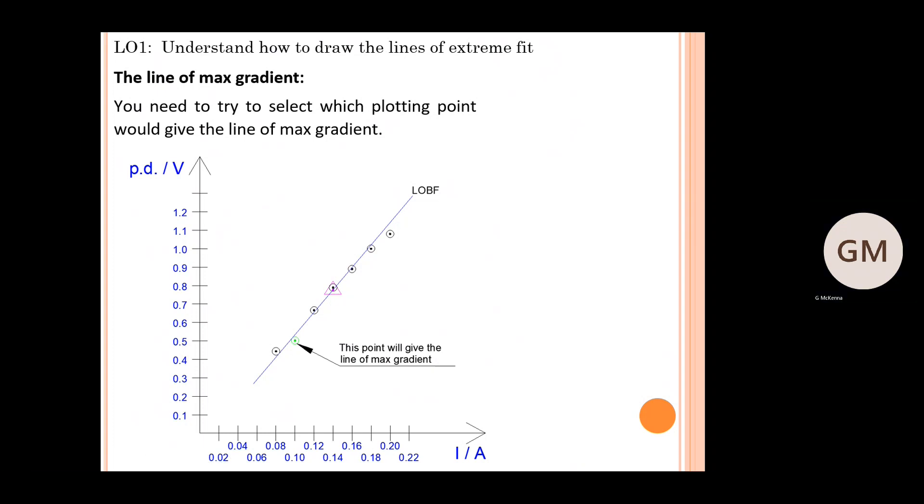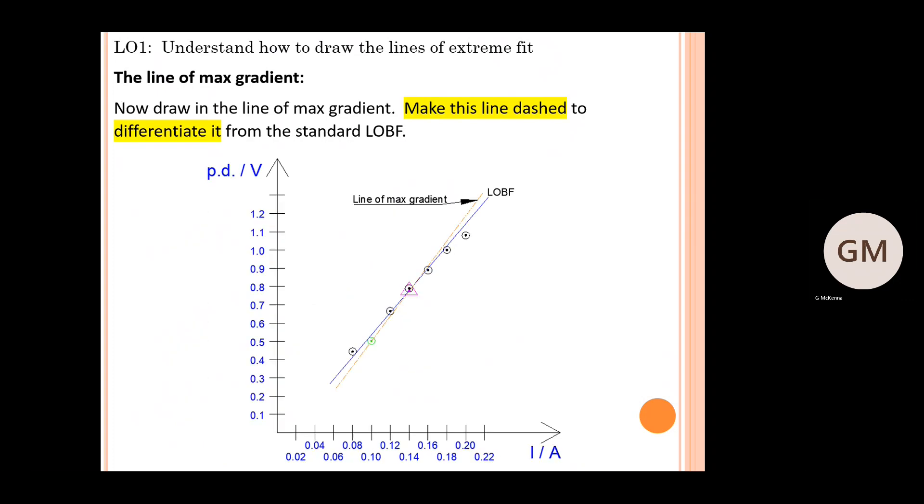We can now draw in that line of max gradient, which you can see in the diagram here. It passes through the centroid and through the point that we've identified there previously, and that's going to give us the line of max gradient. Make sure when you're drawing this line to make it dashed, and that helps to differentiate that line from the solid line which is used for the line of best fit. Do label it as well for the benefit of the examiner.